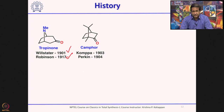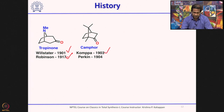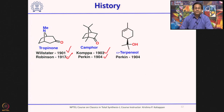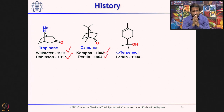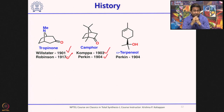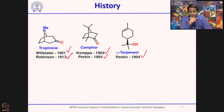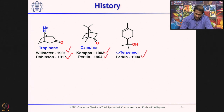Two years later, camphor — which we all know is a monoterpene — was reported by Combes, and a year later Perkin also synthesized camphor. So the first decade of the 20th century saw three reasonably complex molecules for the time. The third molecule Perkin reported was the synthesis of alpha-terpineol, another monoterpene.